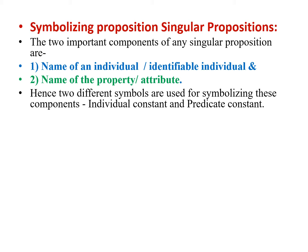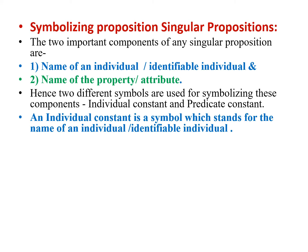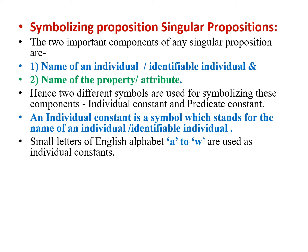We have already studied what is an individual constant. An individual constant is a symbol which stands for the name of an individual — one which can be identified by the words 'this' or 'that' — and small letters of English alphabet from A to W are used as individual constants.